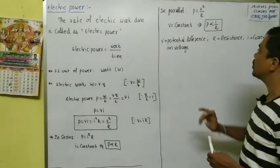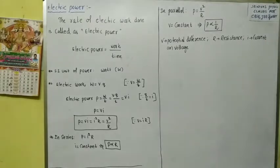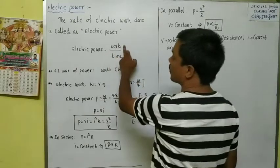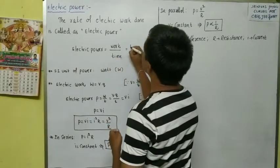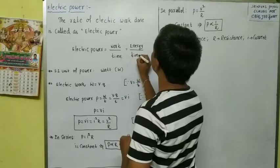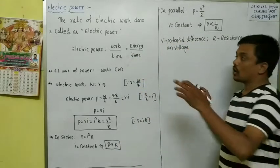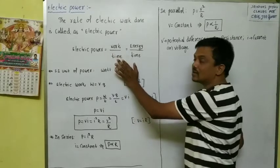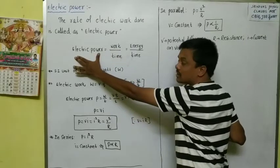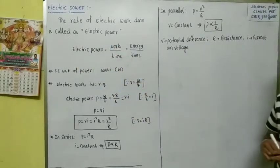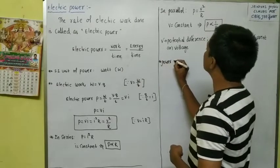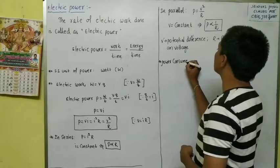Now let us see about electric power consumed. Electric power is equal to work by time, and work is also equal to energy. So we can also write power as energy by time. That means how much work is done every second to send charge through the circuit — that is the electric power supplied. Power consumed: if you want to give the definition of power consumed...